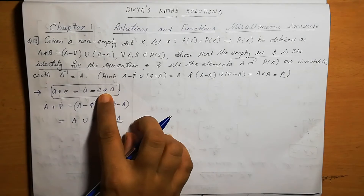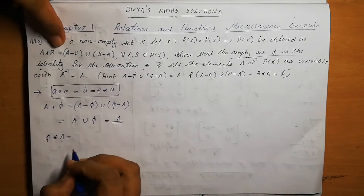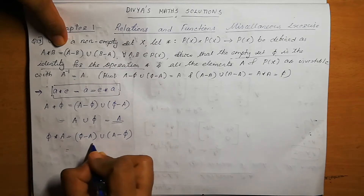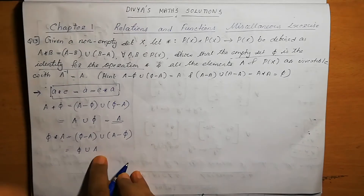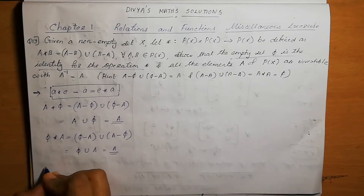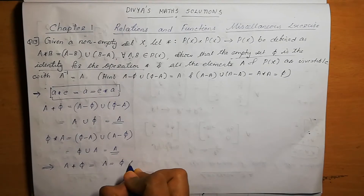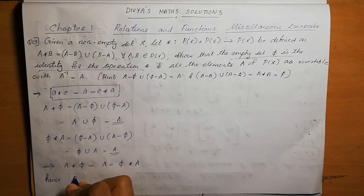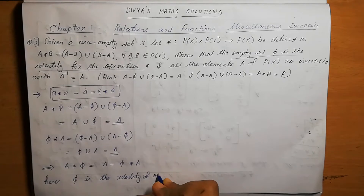Next we take φ star A. φ star A means φ minus A union A minus φ. φ minus A is null set, and A minus φ is A. So null set union A equals A. In both cases the value is equal to A, so the identity definition is satisfied. Therefore, A star φ equals A equals φ star A, meaning φ is the identity of operation star.